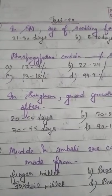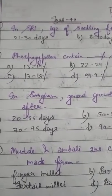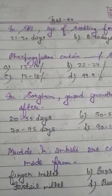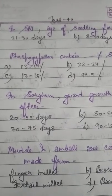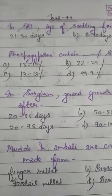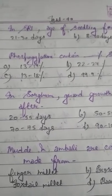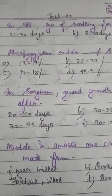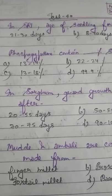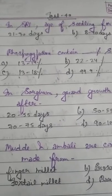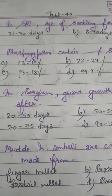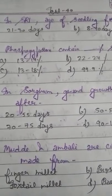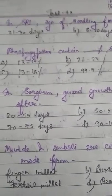Good morning students, I am Mayank Tiwari. Today we will solve test number 40 of the general agriculture series. Let's start. Before starting, please note down the numbers 1 to 10 on your sheet of paper and at the last evaluate your correct responses.